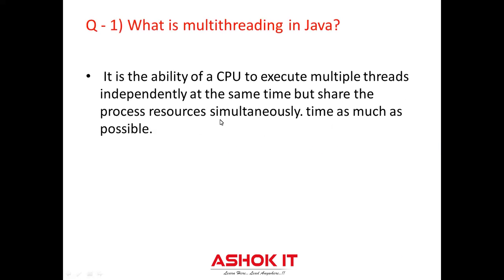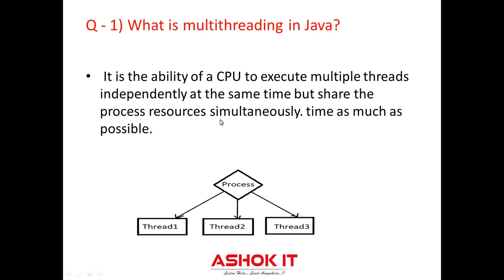Question one: What is multi-threading in Java? As the name suggests, it is the ability of a CPU to execute multiple threads independently at the same time, but share the process resources simultaneously. Its main purpose is to provide simultaneous execution of multiple threads to re-utilize the CPU time as much as possible. If you observe in this diagram, this process is divided into different threads. It is a Java feature where one process can subdivide the specific program into two or more threads to make the execution of the program fast and easy.